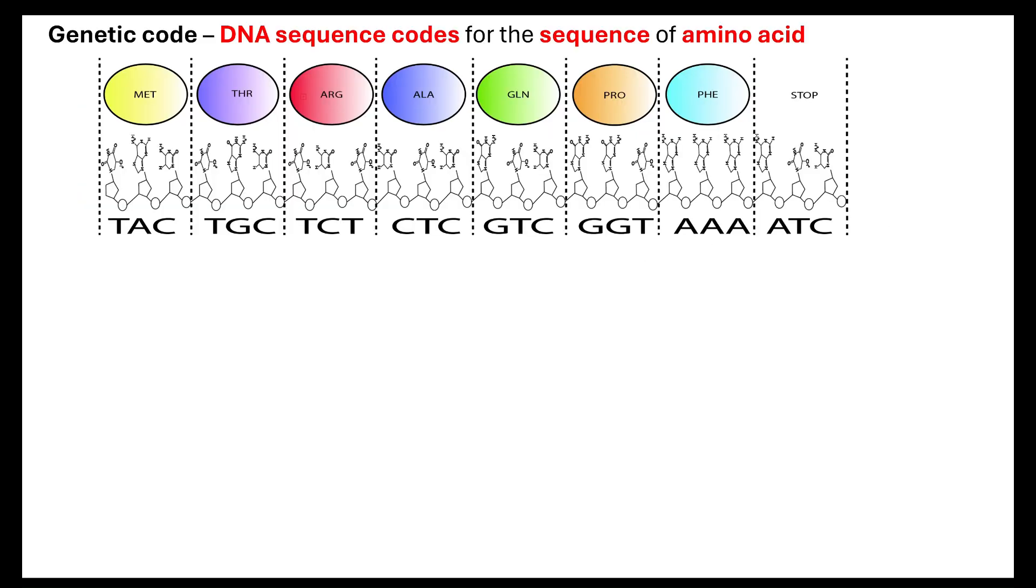Okay, so a few key terms I want to go back to. Genetic code. The DNA sequence, so your DNA bases, have a very specific sequence that codes for the sequence of amino acids. Now, that's important when we look at the primary structure of our polypeptide.